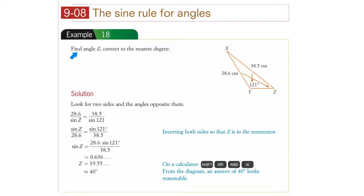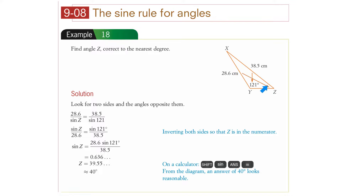Example 18: find angle Z correct to the nearest degree. We have the lengths but we're missing one angle. We've got an angle and the length on the opposite side, so we can use the sine rule. We don't have the angle, but we do have the length.